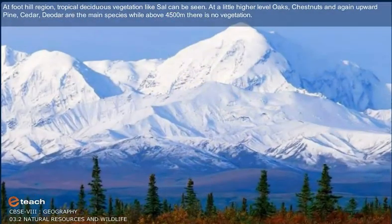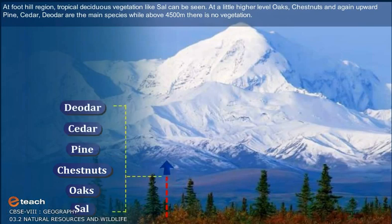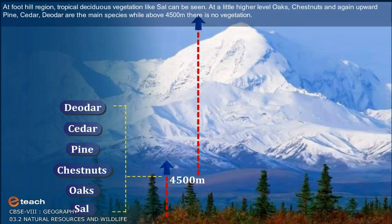At the foothill region, tropical deciduous vegetation like sal can be seen. At a little higher level, oaks and chestnuts grow, and further upward pine, cedar, and deodar are the main species. While above 4,500 meters, there is no vegetation.